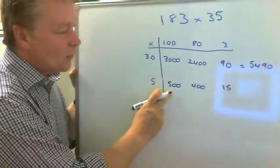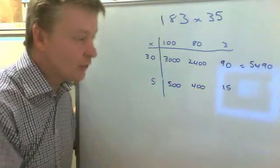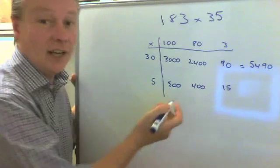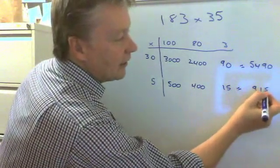The next one is 500 plus 400 is 900, plus 15 is 915. Okay.